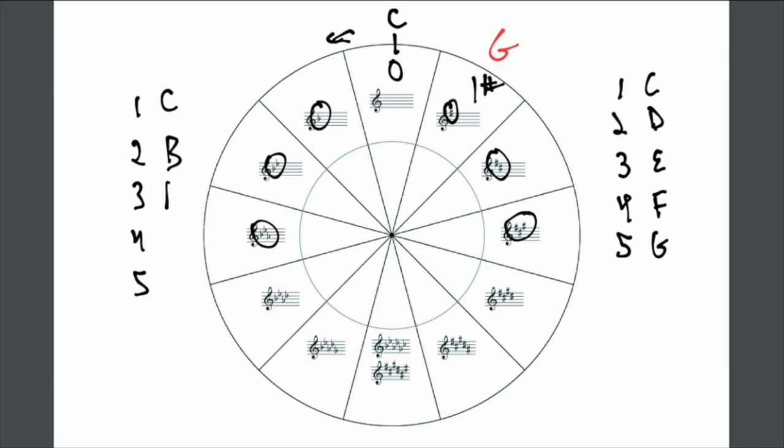C, B, A, G, F. We find that the one flat is F. F major scale has one flat, and that is B flat.